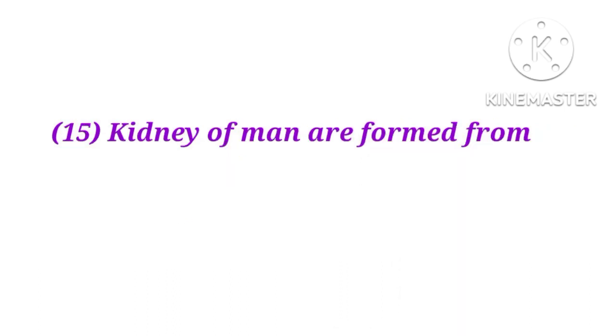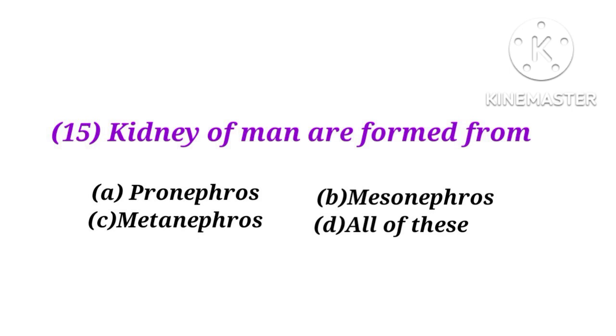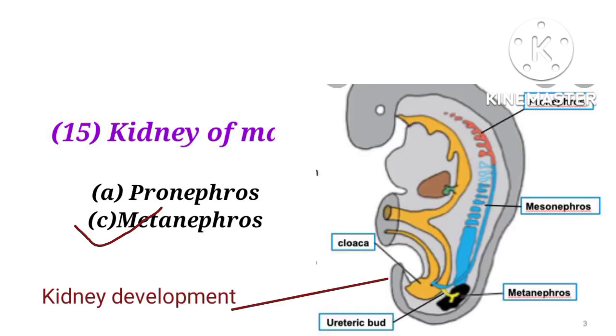Number 15. Kidneys of man are formed from pronephrons, mesonephrons, metanephrons, or all of these? The answer is C. Kidneys of man are formed from metanephrons.